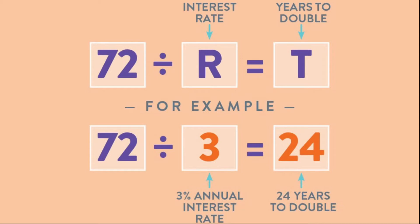If you're getting a 10% return, that'd be 7.2 years. And if you were getting a 12% return, it would double every 6 years — 72 divided by 12 equals 6. You can see how you can quickly do these calculations.